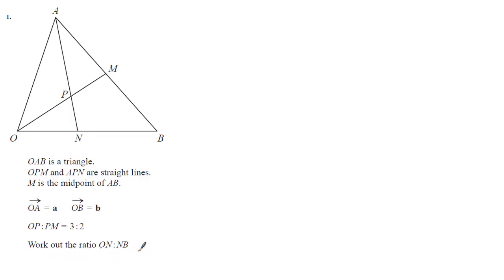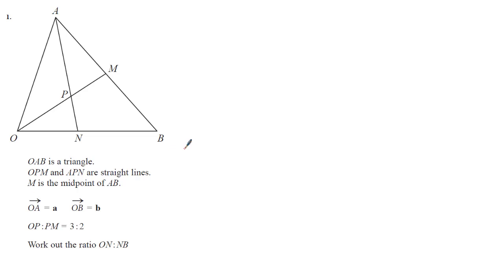Assuming that you're comfortable working between fractions and ratios — if we know the fraction ON of the line OB, then we can find the ratio ON to NB. So in this question we're going to use vector methods to find this fraction. Let's begin by labeling the diagram.